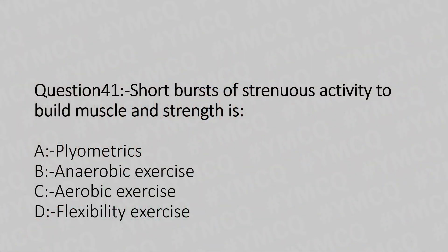Short burst of strenuous activity to build muscle and strength is: Option A, plyometrics. Option B, anaerobic exercise. Option C, aerobic exercise. Option D, flexibility. And the answer is Option B, anaerobic exercise.